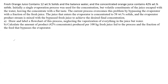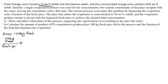The juice that enters the evaporator is concentrated to 58% solids, and the evaporator product stream is mixed with the bypass fresh juice. We take a basis of 100 kg feed. The fresh juice feed is 0.128 kg solid per kg, with the balance being water.